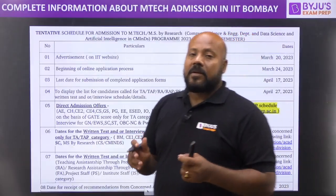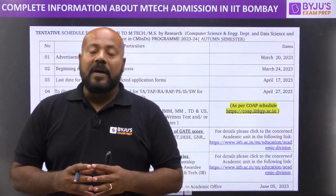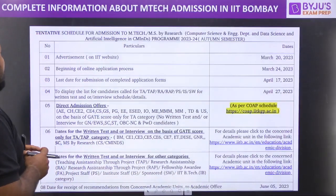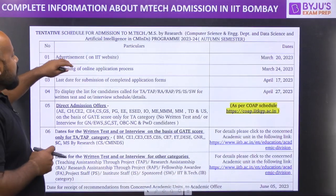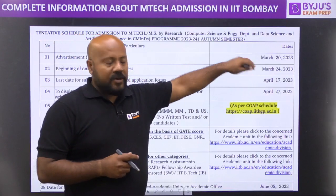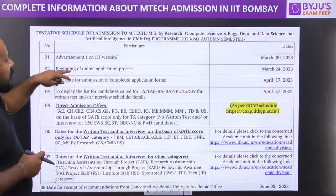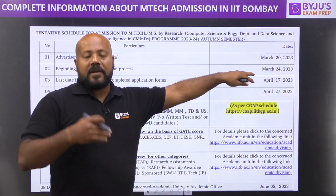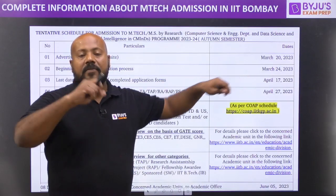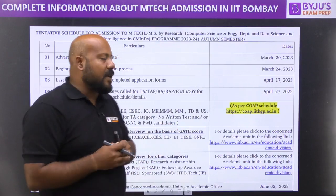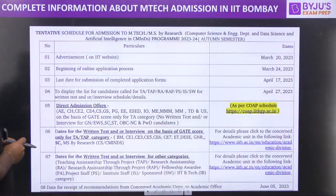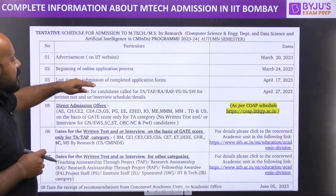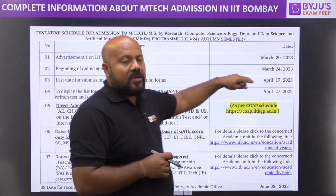Now let us see what are the important dates which you have to keep in mind because you should not miss any of these. The advertisement was available on the IIT website on 20th of March. The beginning of the online application process date is 24th of March — the coming Friday is when the online application process is going to start. The last date for submission of the completed application form is 17th of April.